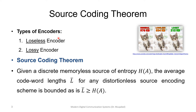We can classify source encoders into two main types: lossless encoders or lossy encoders. When we say lossy, it doesn't have to mean that we are losing a huge amount of data — it's relevant to the application.